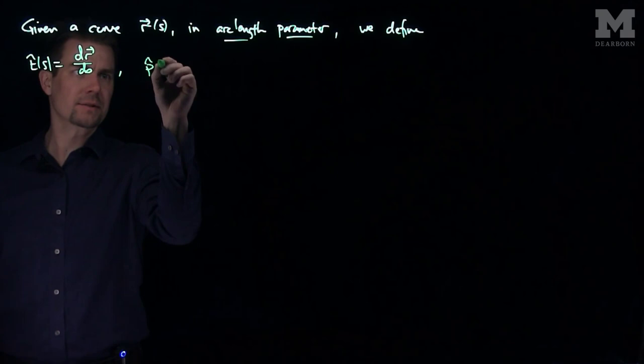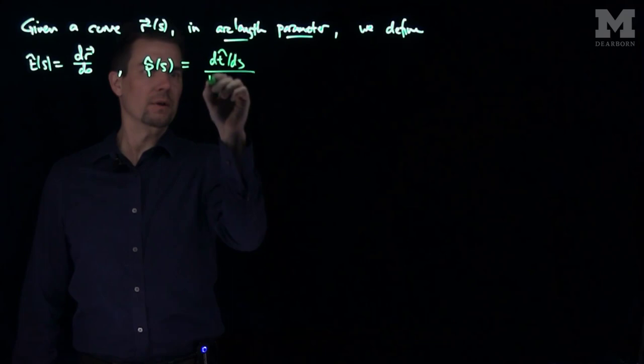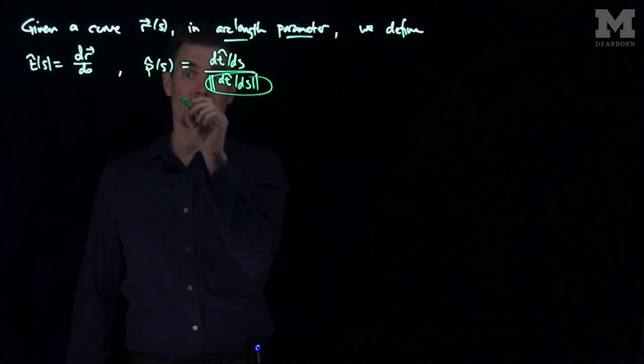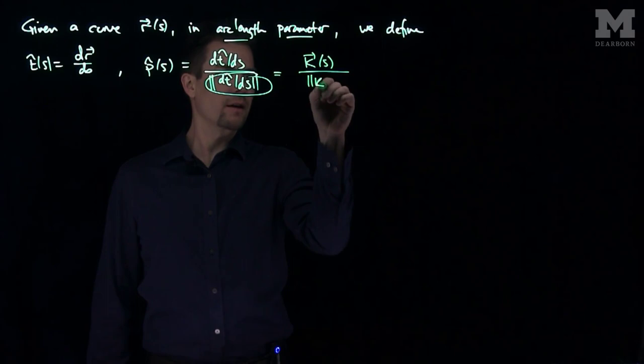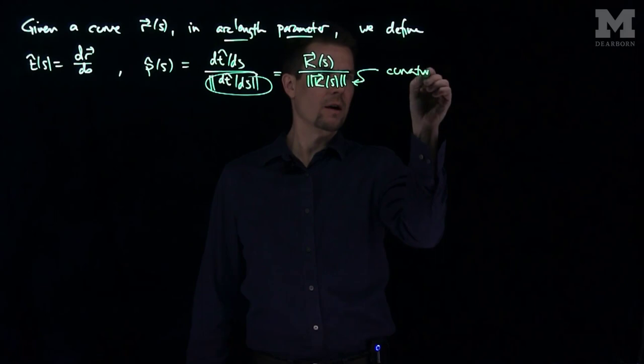We can define our p-hat of s, which is the derivative of t-hat over the length of t-hat's derivative. And we remember that the denominator is called the curvature. So this is the curvature vector divided by the length of the curvature vector.